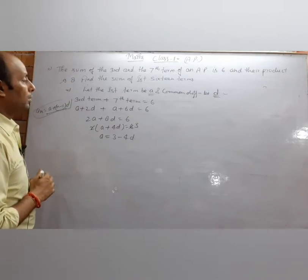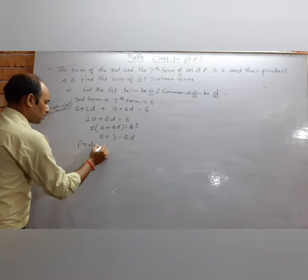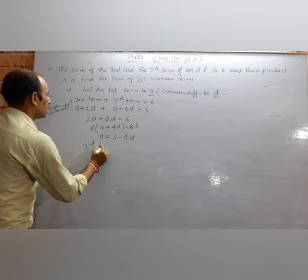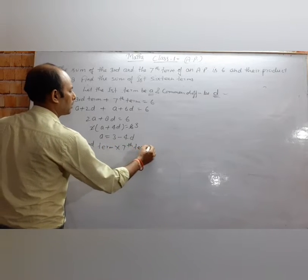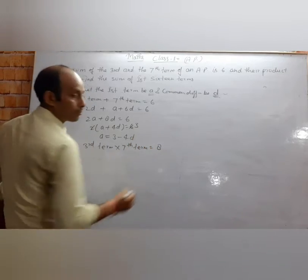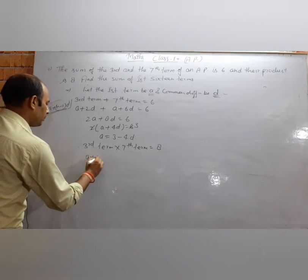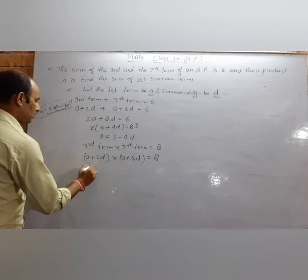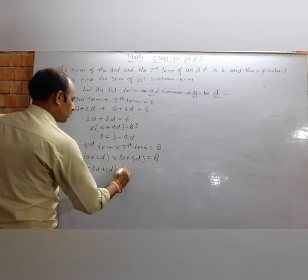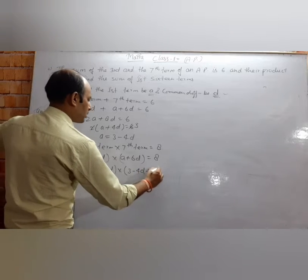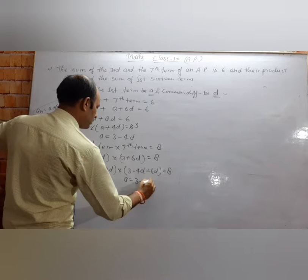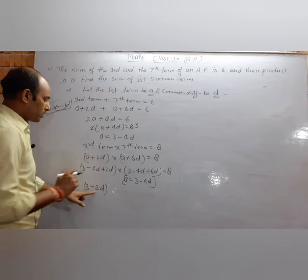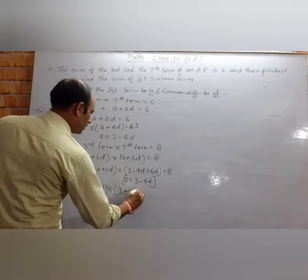Now the product condition: the product of the 3rd and 7th terms is 8. So third term into seventh term equals 8, meaning a plus 2d into a plus 6d equals 8. Substituting a equals 3 minus 4d: we get 3 minus 4d plus 2d into 3 minus 4d plus 6d equals 8, which simplifies to 3 minus 2d into 3 plus 2d equals 8.